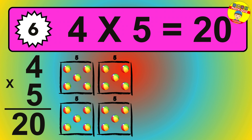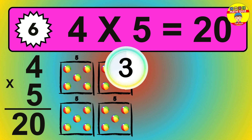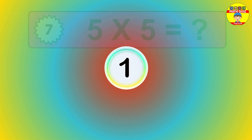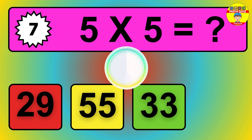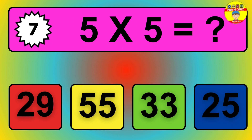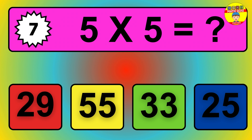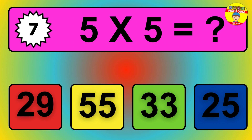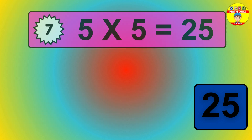Question 8. 7 times 7 equals what? The answer is 7 times 7 is 49. To calculate, we have 7 groups with 7 balls each one. So, how many balls do we have? 49 balls.